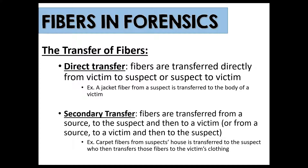A direct transfer is when fibers are transferred directly from victim to suspect or vice versa. An example would be a jacket fiber from a suspect transferred to the body of a victim. A secondary transfer is when fibers are transferred from a source to a suspect and then to a victim — or those roles can be switched. For example, carpet fibers from a suspect's house could transfer to the suspect's shoe, and then when the suspect commits a crime, those fibers transfer to a victim's clothing, home, or car.